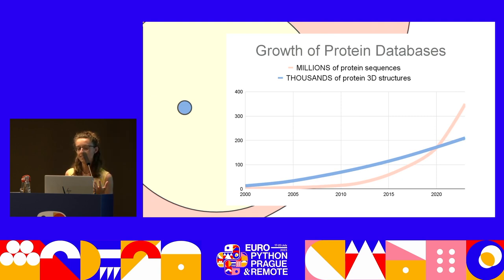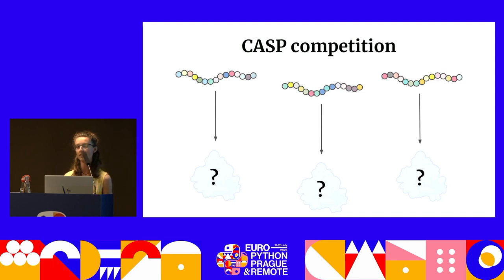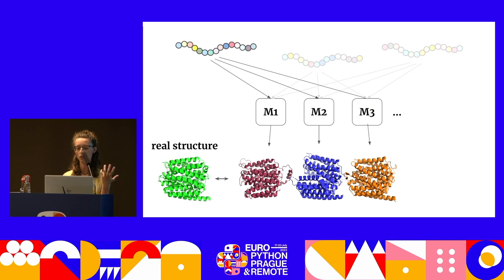This plot shows it will get better in the future, so it would be really good to have prediction tools that help us get the 3D structure from a protein sequence. Luckily, there is something like that. There's a really nice competition called CASP that runs every two years. The organizers publish protein sequences with unknown structure, anybody can join with their models to predict the structure, and then the organizers reveal the real structure and see who predicts best.